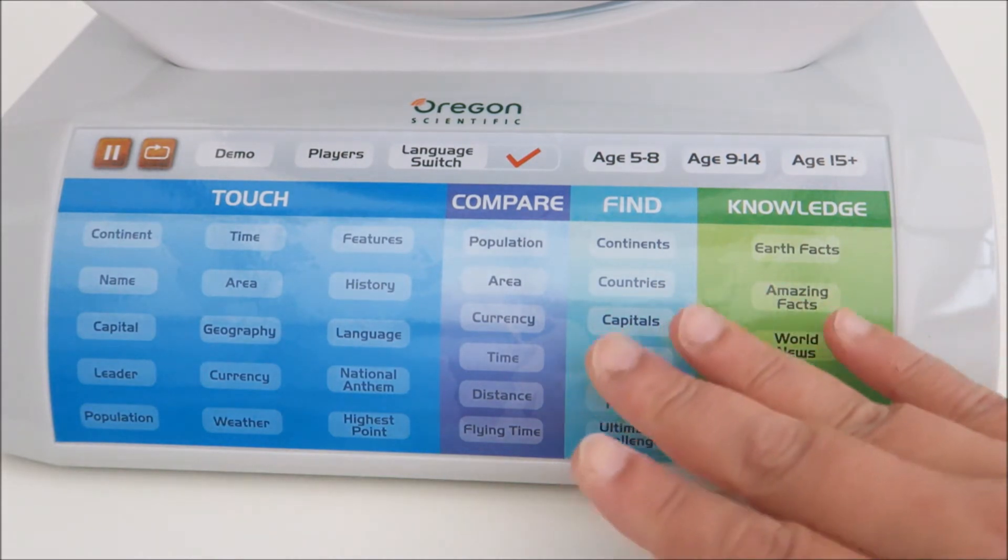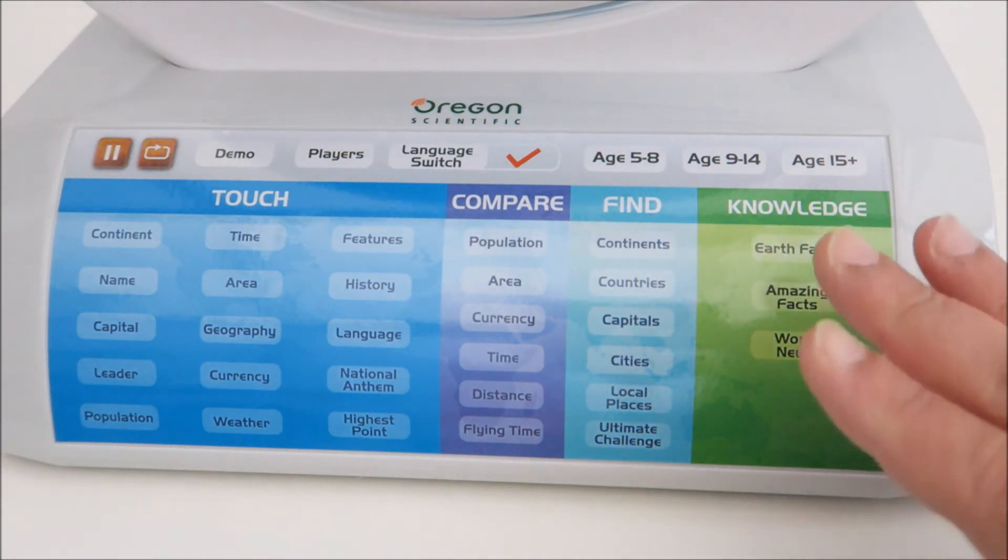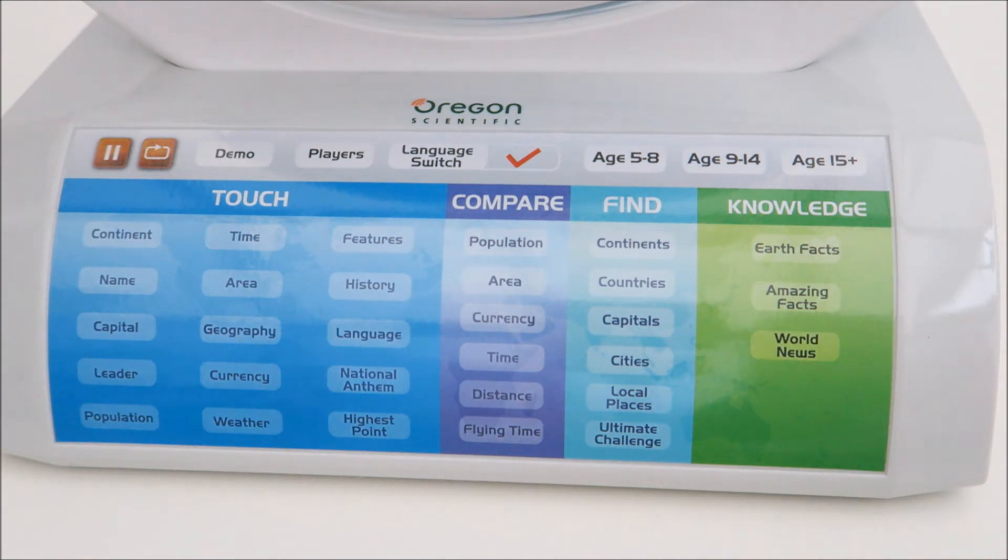And for this, they have three different age groups. You can select five to eight, nine to 14 or 15 plus. I love how this smart globe is that it grow with your child.